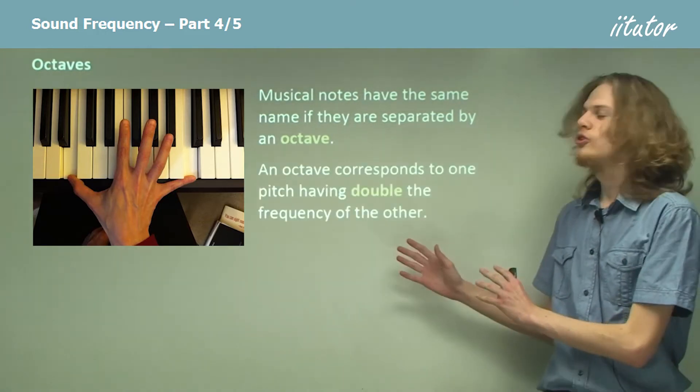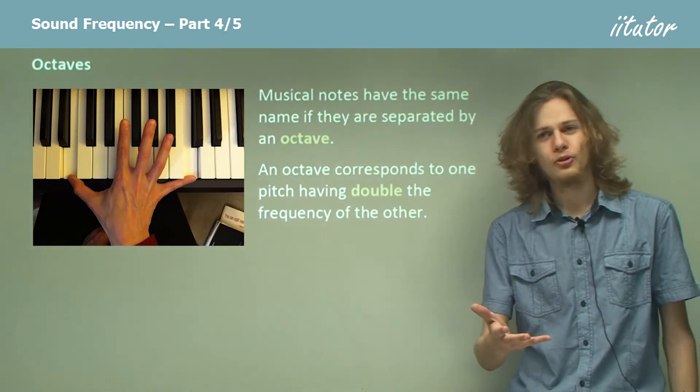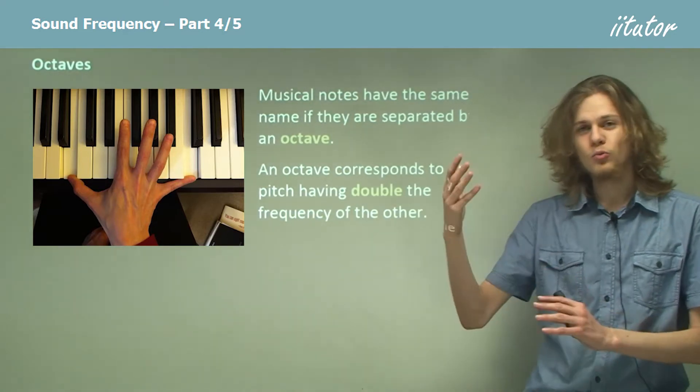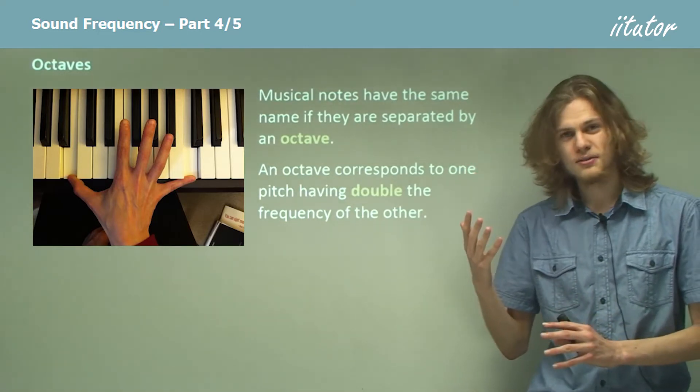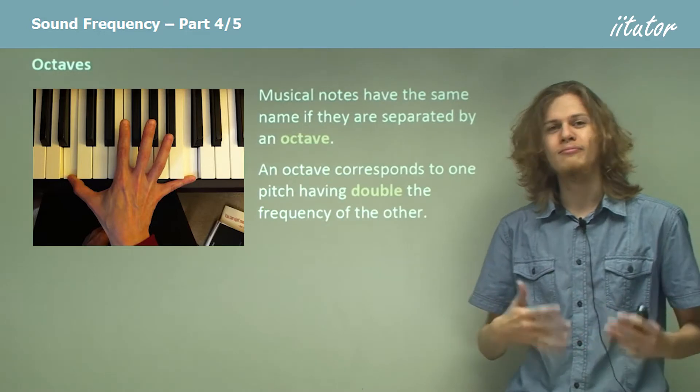An octave corresponds to a pitch having exactly double the frequency. So that means if the lower note is 200 Hertz then the upper note will be double that, 400 Hertz, and an octave above that will be double 400, so 800 Hertz.